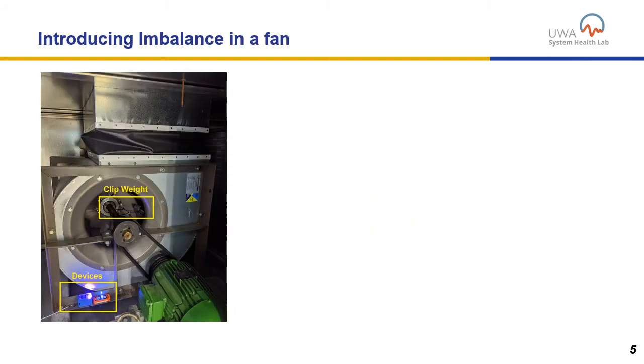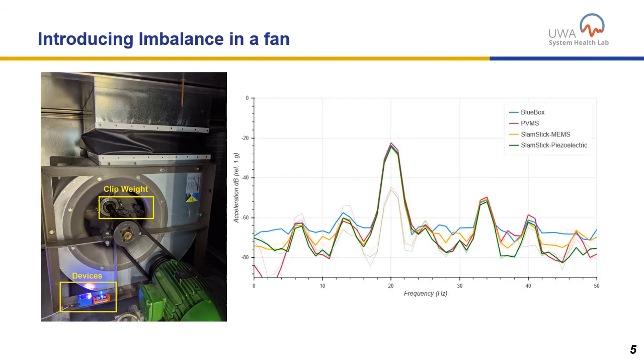For the fan tests, we induce imbalance by adding a clip weight in one of the blades of the fan, and we basically increase the driving frequency's amplitude by 10 times, or 20 decibels. And as you can see in the graph, we've got similar values between the MEMS and the piezoelectric accelerometers.